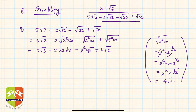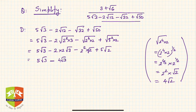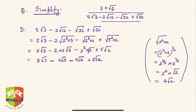So it is 5√3 minus 4√3, minus 4√2, plus 5√2. Simplifying: 5√3 minus 4√3 is √3, and 5√2 minus 4√2 is √2. So this is the simplified denominator.